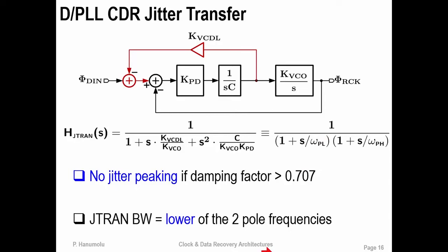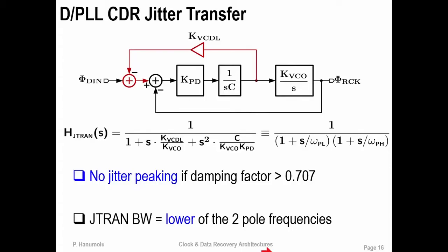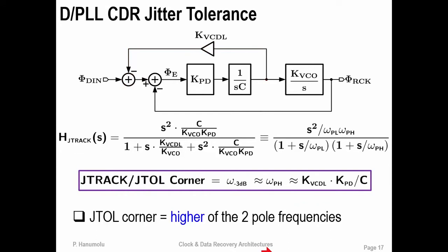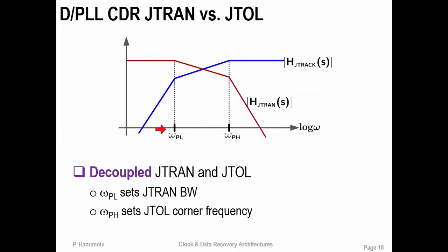A simple calculation reveals that for this CDR, the jitter tracking transfer function shows that the tolerance corner is now set by the higher of the two-pole frequencies, while the transfer bandwidth is set by the lower of the two-pole frequencies. This gives an extra degree of freedom to set the jitter tolerance corner independent of the jitter transfer bandwidth — an extremely important advantage of the DPLL CDR architecture.